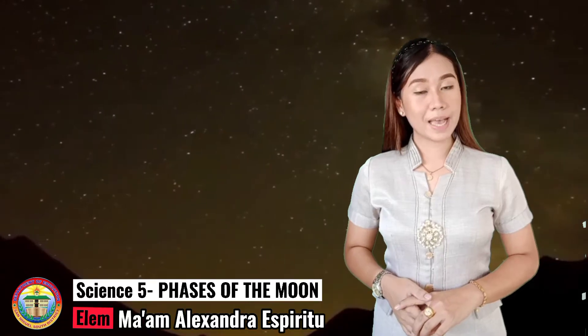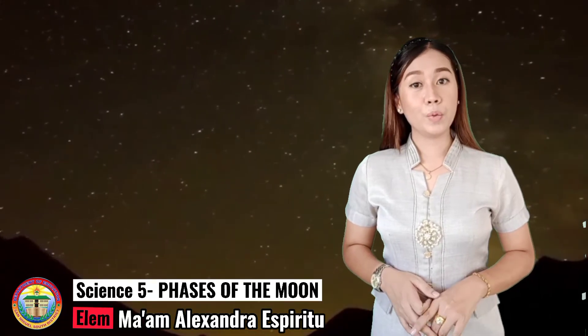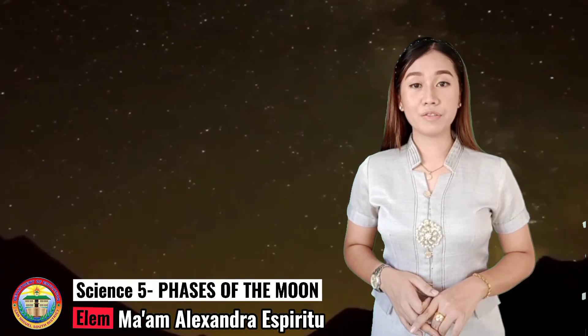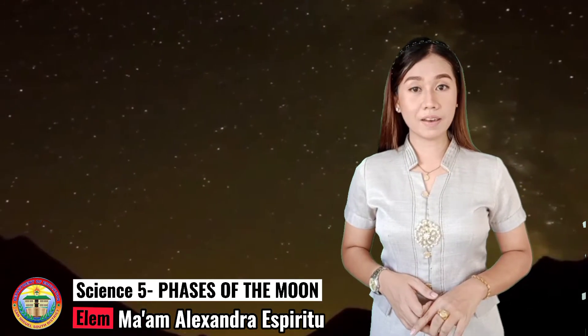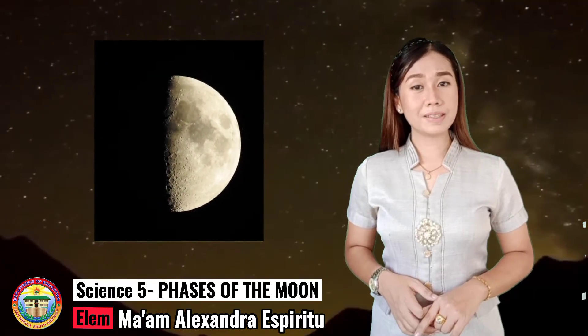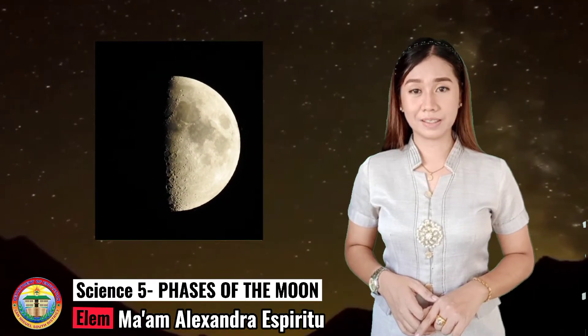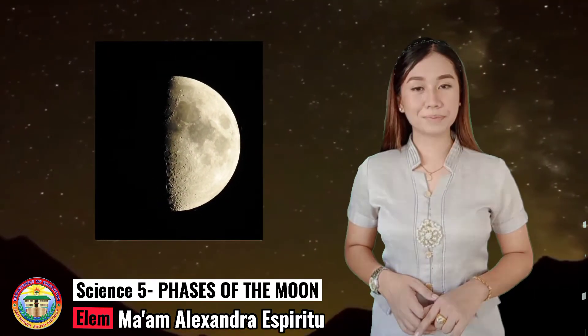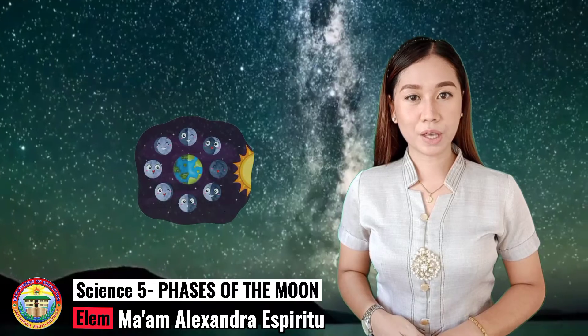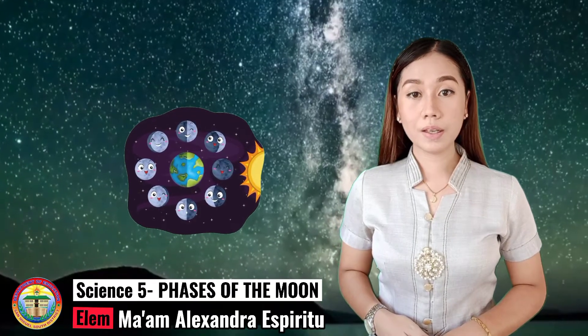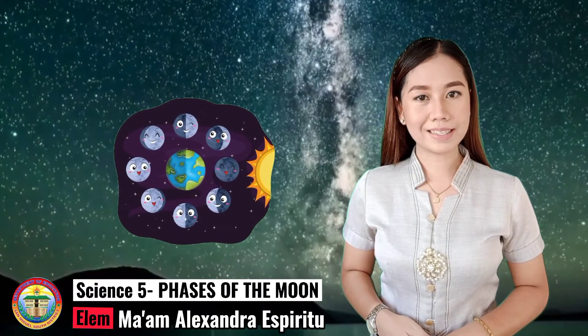For example, when only half of the Moon is being illuminated by the Sun, then you will see only half of the circle. These different shapes of the Moon are called phases.